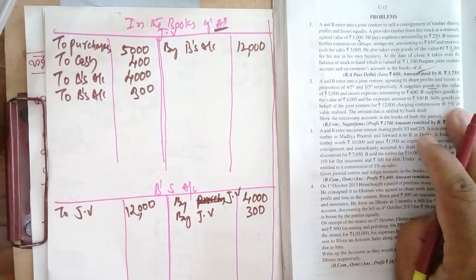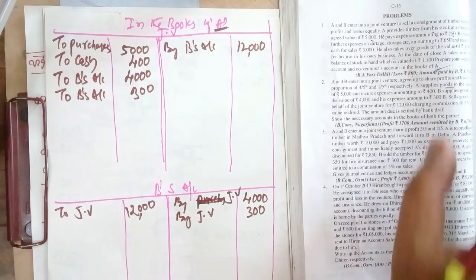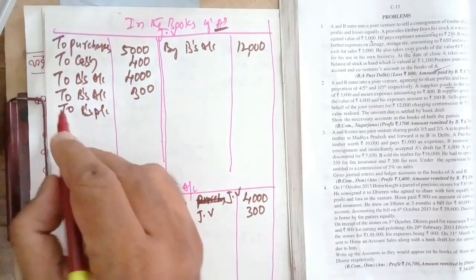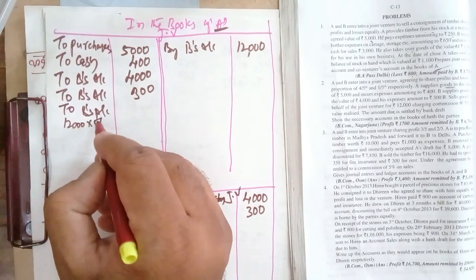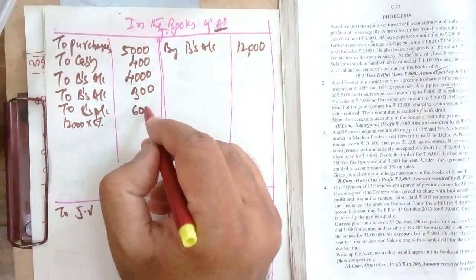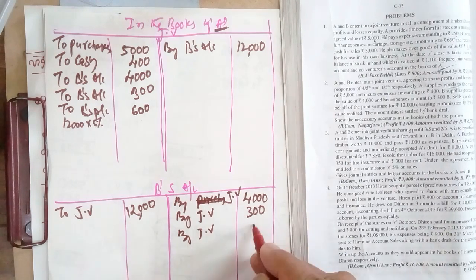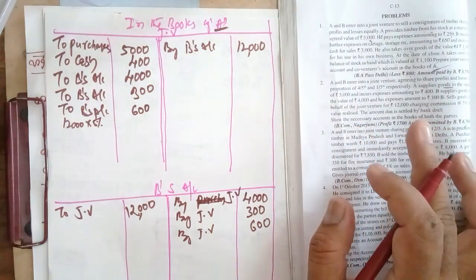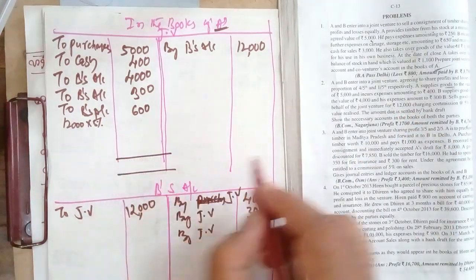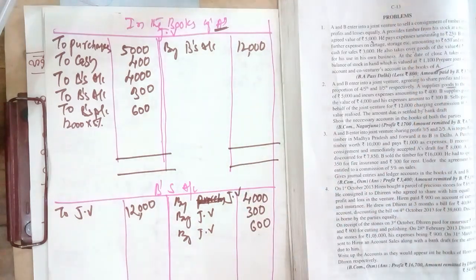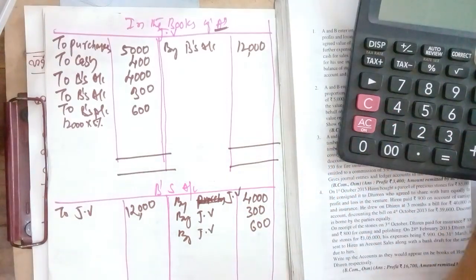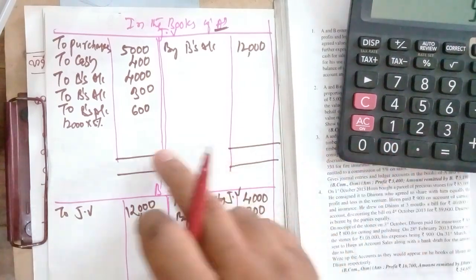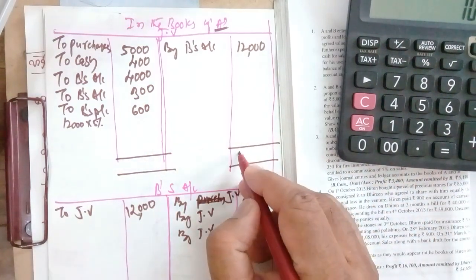Charging commission at 5% of the value realized — the sale value. This commission is an expenditure for the joint venture and B is charging it, so it goes to B's personal account. 5% of 12,000 equals 600. In B's account: by joint venture — 600. The amount due is settled by bank draft. Now we need to close the joint venture account and ascertain the profit. The credit side has 12,000; debit side: 5,000 + 400 + 4,000 + 300 + 600 = 10,300.